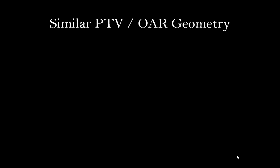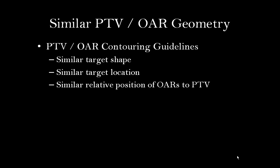The first step in selecting a patient for a rapid plan model is to consider the PTV and organ at risk geometry. Patients included in the same model should have similar PTV and organ at risk contouring guidelines. We will be showing how to create a prostate model, which includes both intact prostate and prostatectomy patients, as the targets are both small and centrally located. The bladder, rectum, and femurs were all contoured using the same guidelines and have a similar relative position to the PTV for all patients.